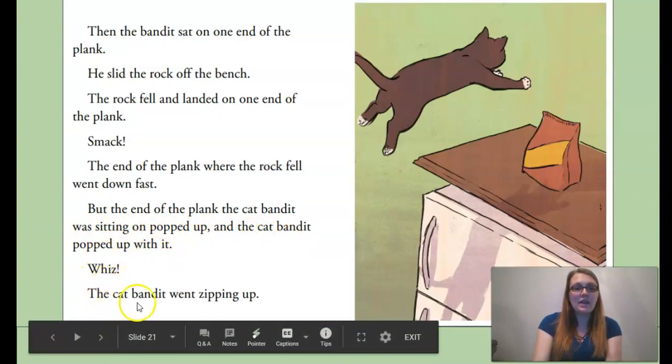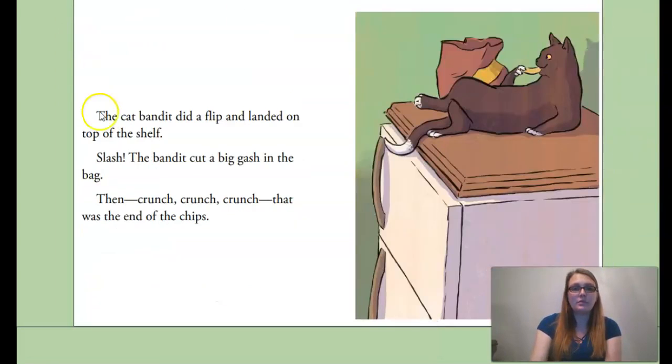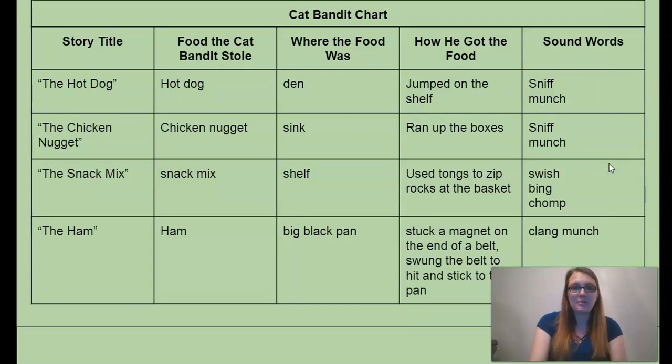Whiz! The Cat Bandit went zipping up. The Cat Bandit did a flip and landed on the top of the shelf. Slash! The Cat Bandit caught a big gash in the bag. Then crunch, crunch, crunch. That was the end of the chips. So his plan worked. He was able to fling himself, catapult himself on top of the fridge to get the chips.